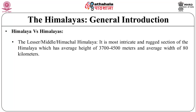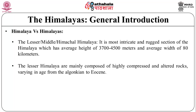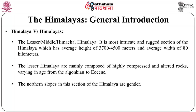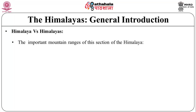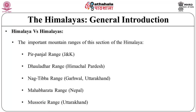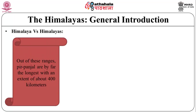The lesser/middle Himachal Himalayas is the most intricate and rugged section of the Himalayas, with an average height of 3700 to 4500 meters and average width of 80 kilometers. The lesser Himalayas are mainly composed of highly compressed and altered rocks varying in age from Algonquian to Eocene. The northern slopes in this section are gentler. Important mountain ranges include the Pirpanjal range in Jammu and Kashmir, Dhauladhar range in Himachal Pradesh, Nag-Tibba range in Garhwal-Uttarakhand, Mahabharat range in Nepal, and Mussoorie range in Uttarakhand.